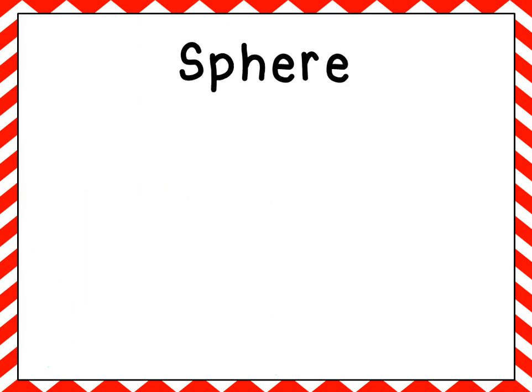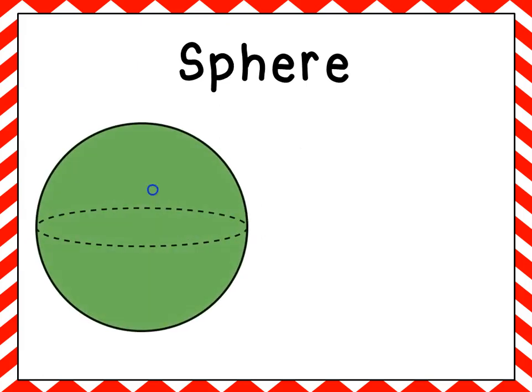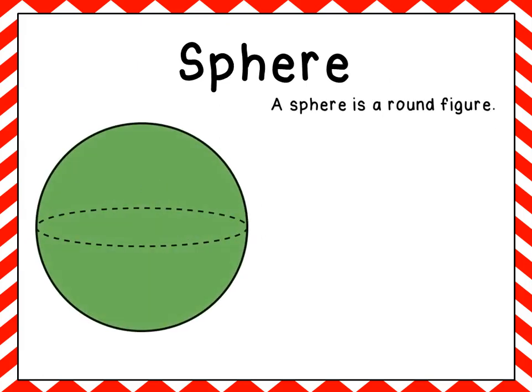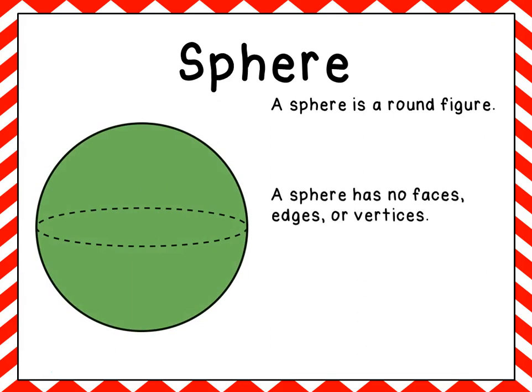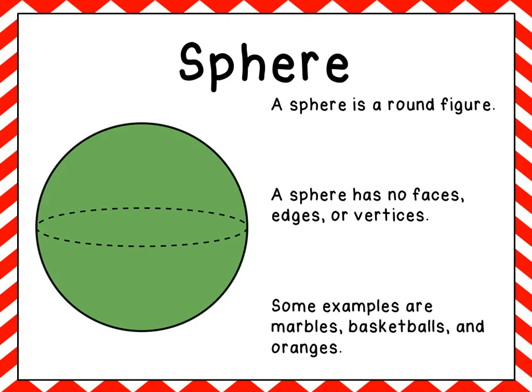The next solid figure is a sphere. A sphere is a round figure. Because it's round, a sphere has no faces, no flat surfaces, no edges, and no vertices. Some examples of a sphere are marbles, basketballs, and oranges.